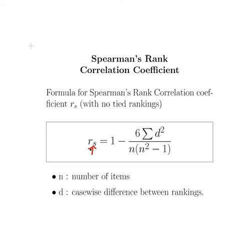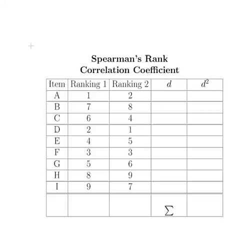The formula is: 1 minus a fraction — 6 times the sum of D squared, divided by N times (N squared minus 1). Here D is the case-wise difference for each ranking, and N is the number of items or cases. We're going to fill out a table by computing those case-wise differences, squaring them, and then summing them up.